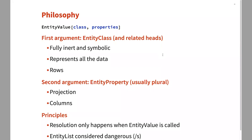What an entity-property framework does is basically there is a resolver function called EntityValue, and it takes a first argument — classes of entities, lists of entities, or single entities — which represent the rows of the data. If you imagine a table, these are rows in the table, and the first argument is in general an object that is fully inert and symbolic, representing what you want to get out of a given table and what table you want to get it out of. The second argument, the properties, are what is called in relational algebra the projection — what columns you want out of that table.